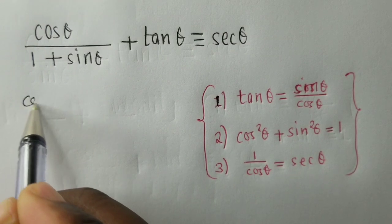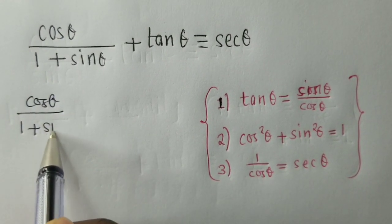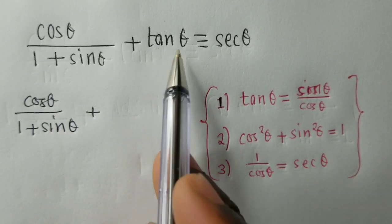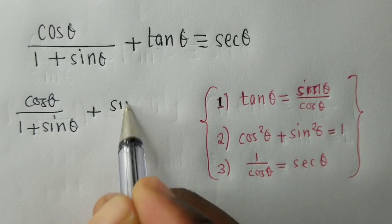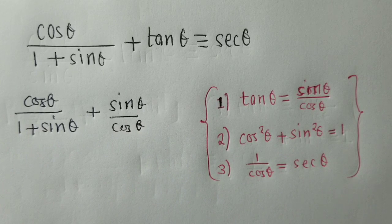So, let's try to substitute cos theta over 1 plus sin theta plus. Here, we substitute, so we have sin theta over cos theta.